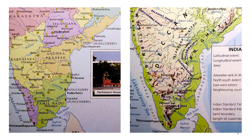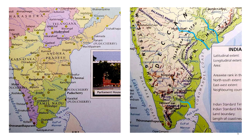Moving to Southern India, we have five states: Andhra Pradesh, Telangana, Karnataka, Kerala, and Tamil Nadu. It is bordered by the Arabian Sea to the west, the Bay of Bengal to the east, and the Indian Ocean to the south. Major rivers are Godavari, Krishna, and Kaveri. It also has two hill ranges — the Eastern Ghats and the Western Ghats.